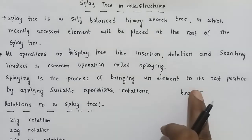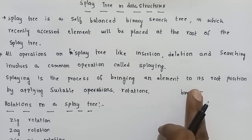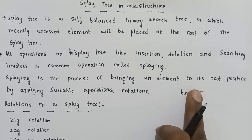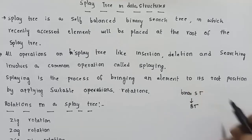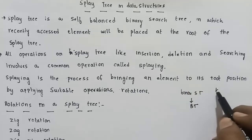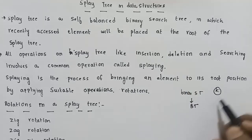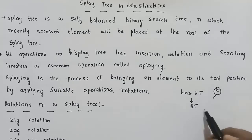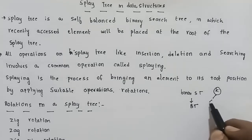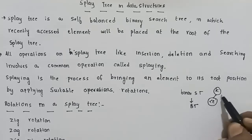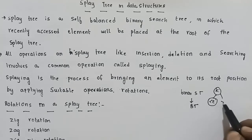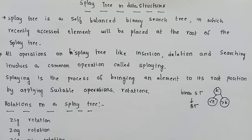In a binary search tree, a node is the root node. A left child is less than the root node value, and a right child is greater than the root node value.